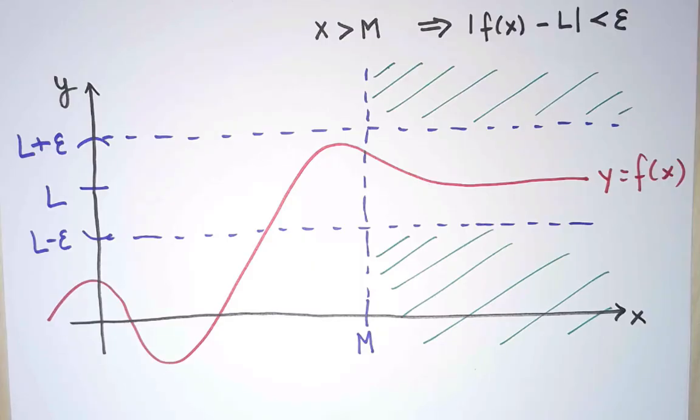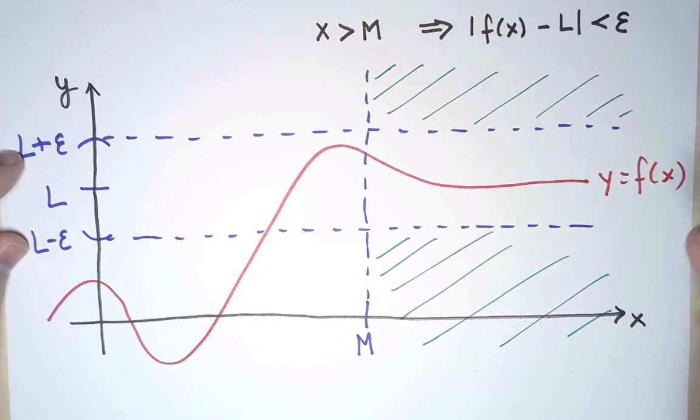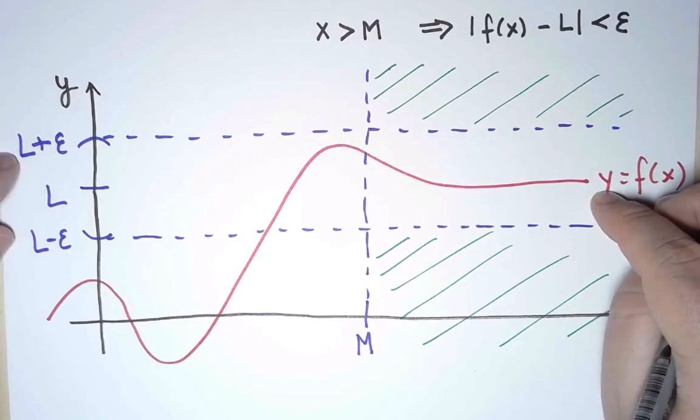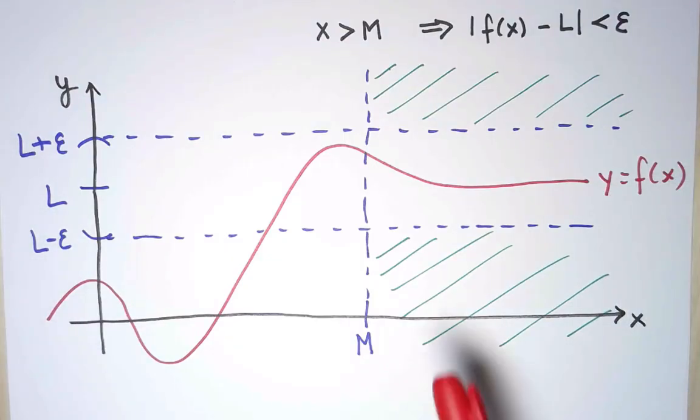Now, if this is true for just one value of M fixed and one single value of ε fixed, then that's not enough. That doesn't guarantee that the limit is L. That doesn't guarantee my function comes arbitrarily close to L.